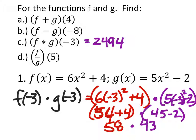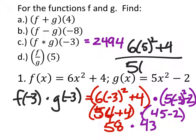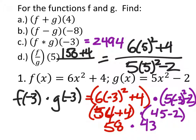Division is going to work the same way, except for, again, we're going to have a five there. So, six times five squared plus four, all divided by five times five squared minus two. So, what does that give us? 25, 150 plus four over 125 minus two.